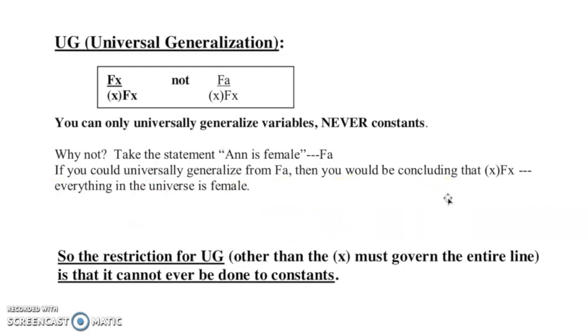There's not a lot of rules for this one either. So the only restriction is the X must govern the entire line. Oh, and the big one is never with a constant. Okay, so you can go from a universal and then pick one aspect of that universal, pick one particular out of that universal and put a constant on it. But you can't do it the other way around. So the example here is why not? Take the statement 'Ann is female,' so that's how we would translate it. If you could universally generalize from Fa, then you would be concluding that everything in the universe is female. So you can't go from the universal to the particular.